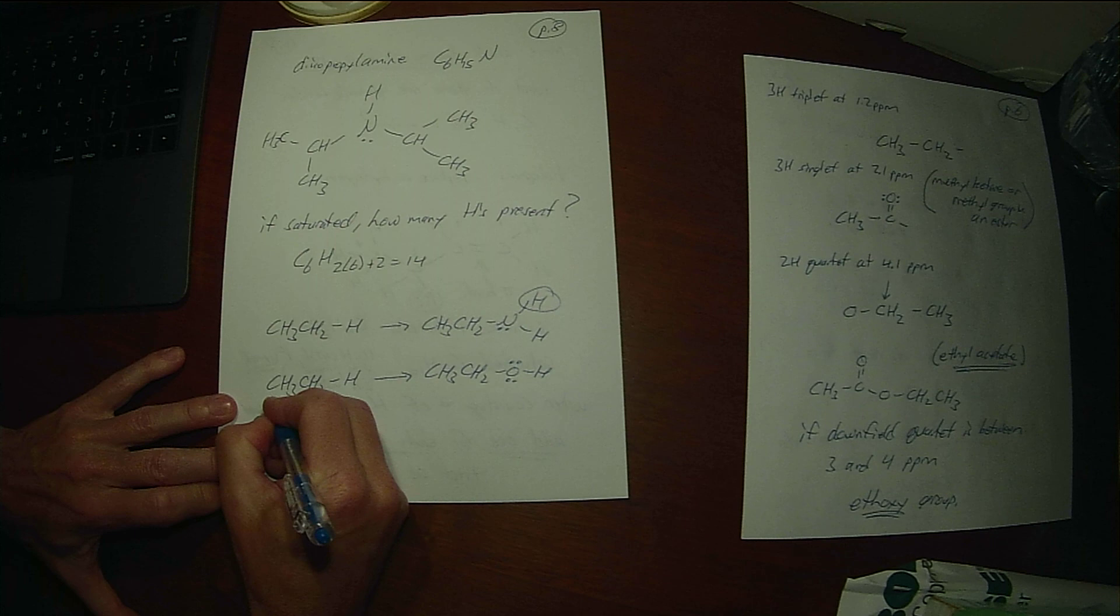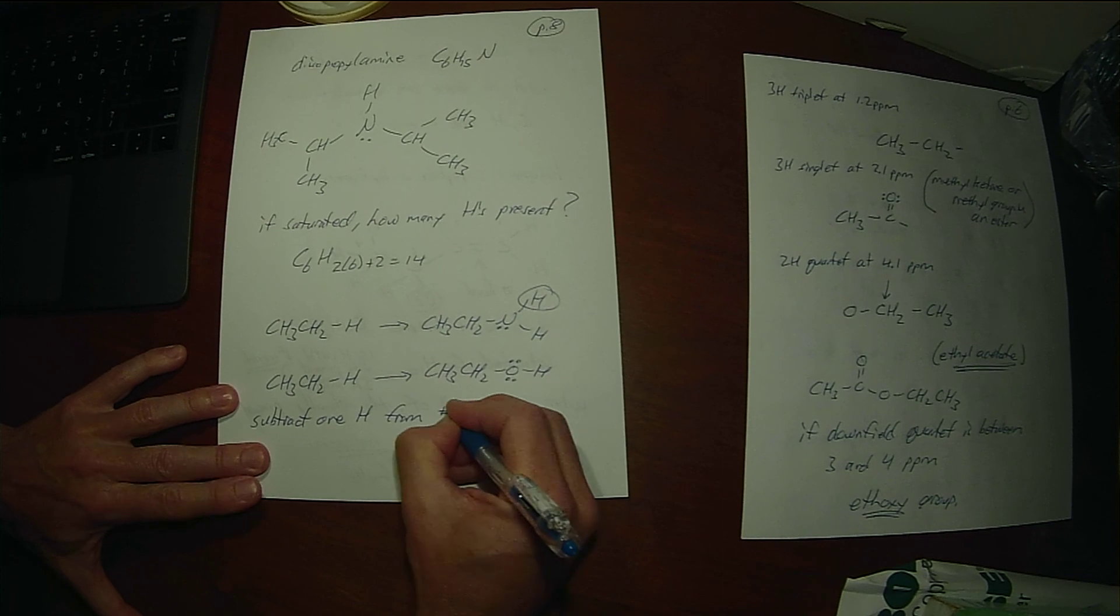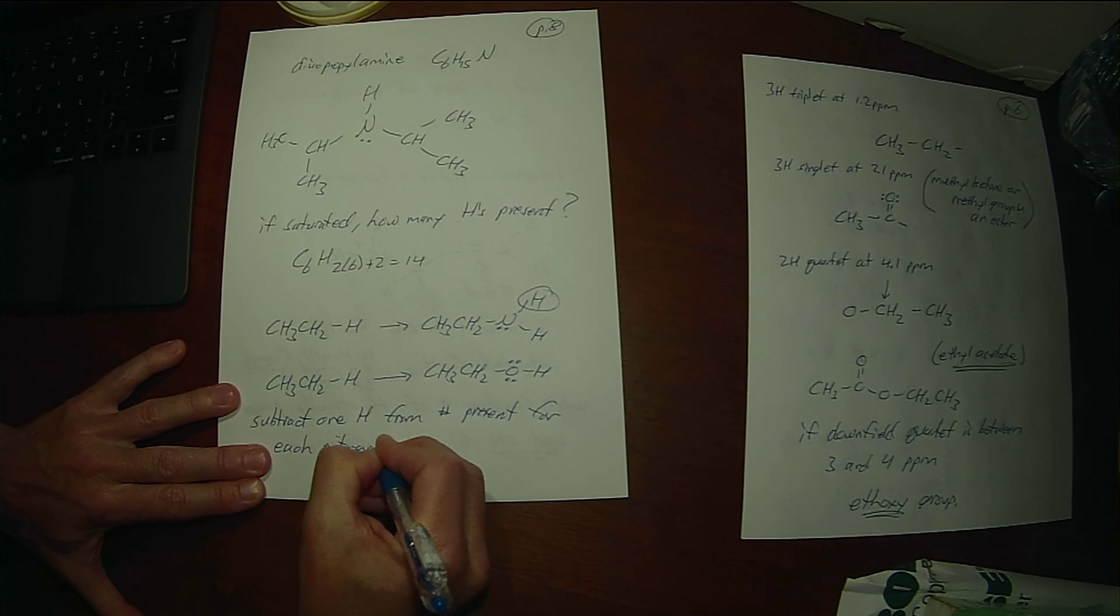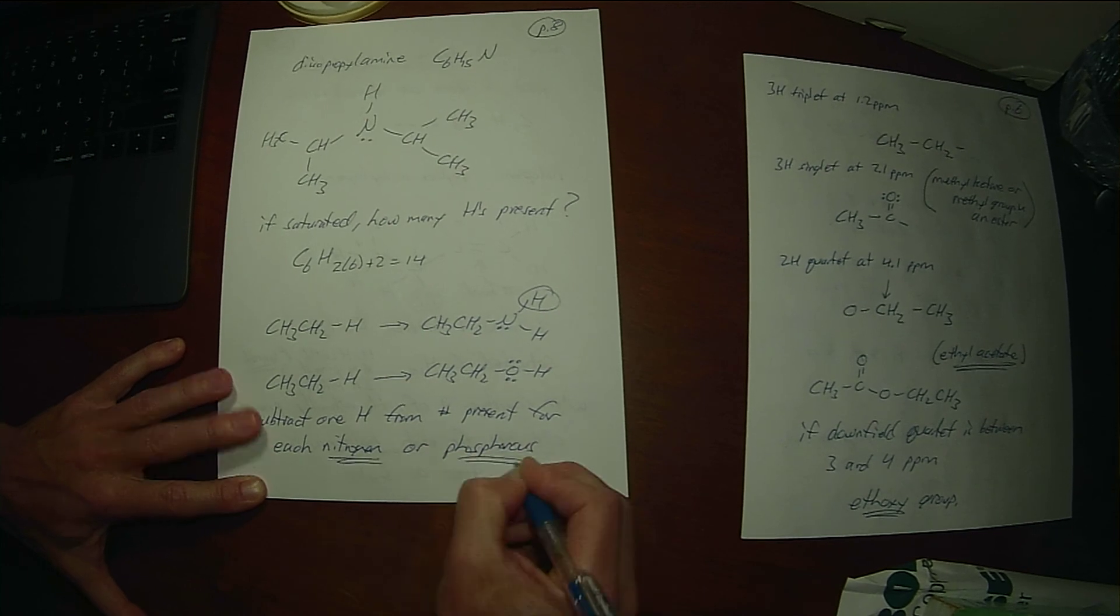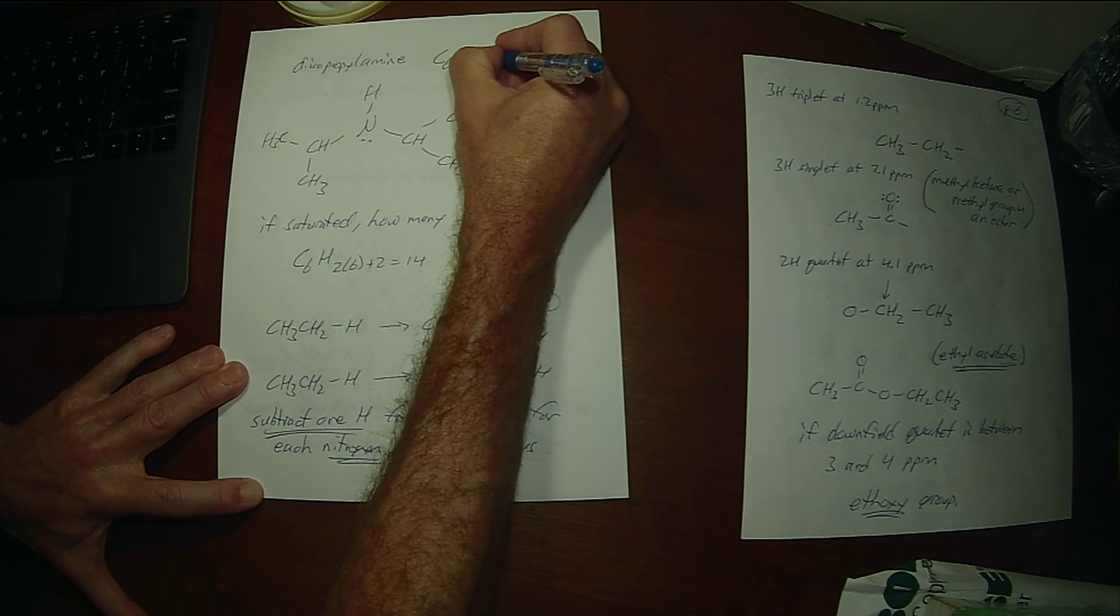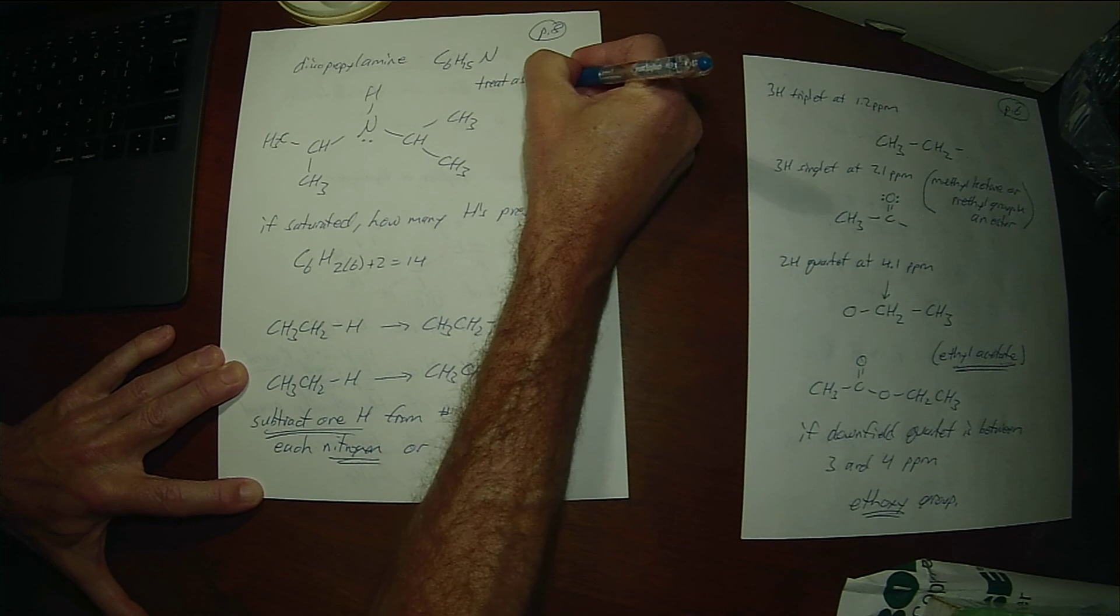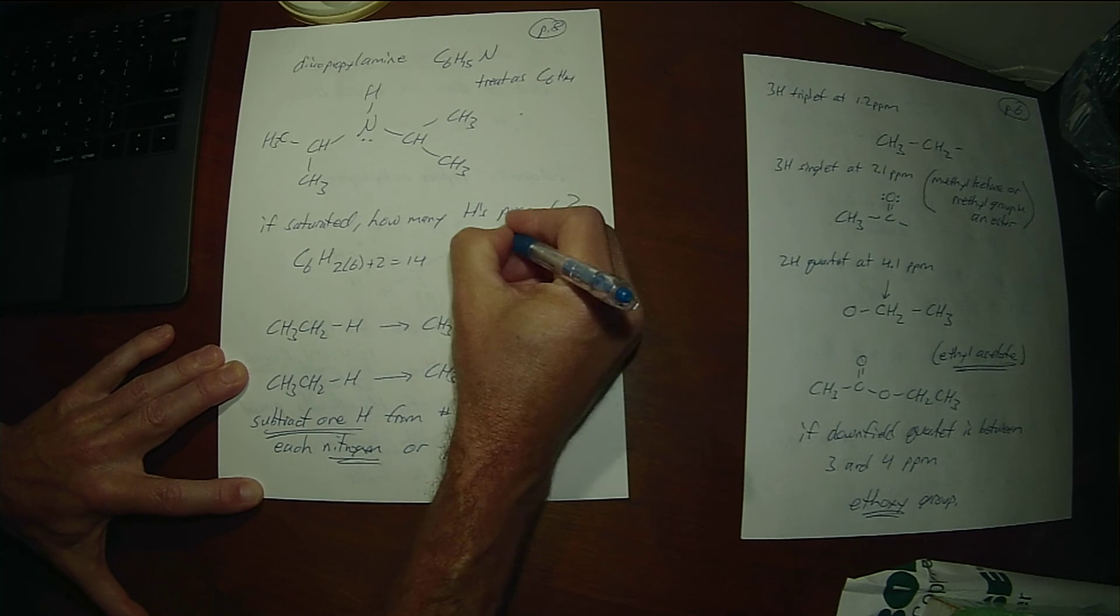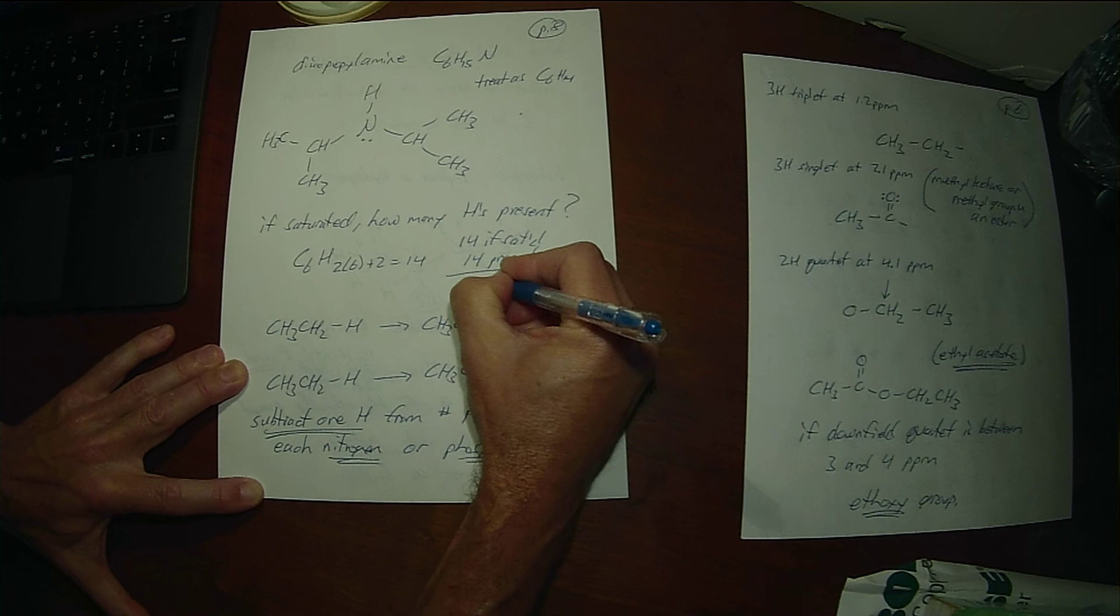So we need to subtract 1H from the number present for each nitrogen, or phosphorus for that matter, if you've got a phosphorus, because phosphorus is right below the nitrogen. So we're not going to treat this as C6H15N. When we take that nitrogen, it's going to take a hydrogen with it. We're going to treat this as C6H14. And then we're going to take the 14 that it has from the 14 for saturated. And that's going to be zero. So there's zero degrees of unsaturation.